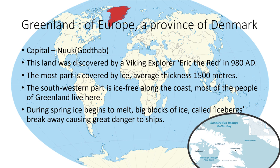Most of Greenland is covered by ice. The average thickness of the ice is 1,500 meters. The southwestern part is ice-free along the coast — therefore most of the people of Greenland live there. During spring, ice begins to melt. Big blocks of ice called icebergs break away, causing great danger to ships.